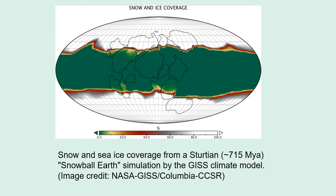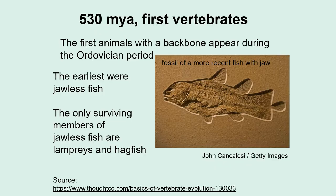It's not thought that the entire Earth was frozen solid, but instead perhaps there was a lot of slushy ice. Soon after, the first vertebrates appear by 530 million years ago — that is, animals with a backbone like we have.